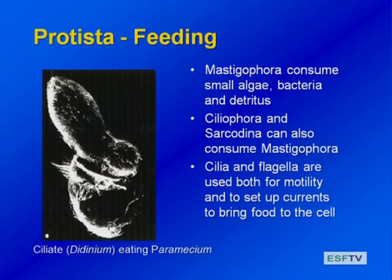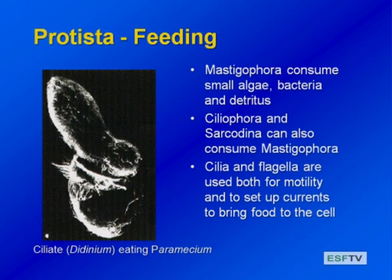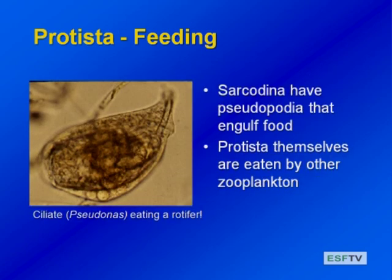The mastigophora or flagellates generally consume small algae — things smaller than them — as well as bacteria, as we talked about in the microbial loop, and some dead particles. The ciliophora and the amoeboid forms can also consume the flagellates. The cilia and flagella aren't just used for locomotion; they're also used to bring currents and food to the cell. Sometimes you'll get ciliates eating each other, or amoeboid forms and ciliates eating each other. If they're eating algae, they're going to be primary consumers, and then they might be eaten by predatory zooplankton as secondary consumers.